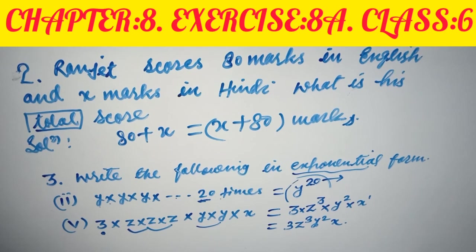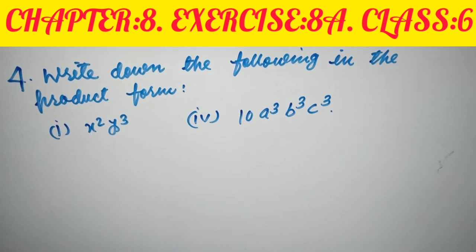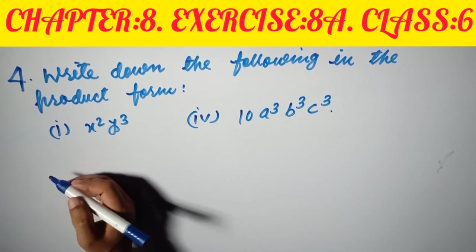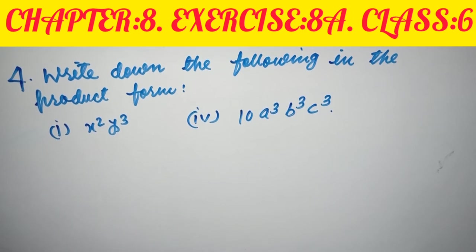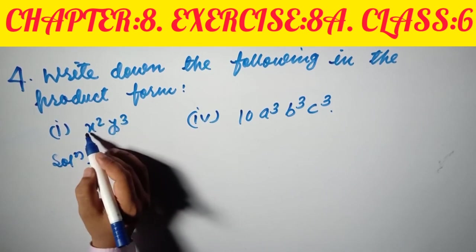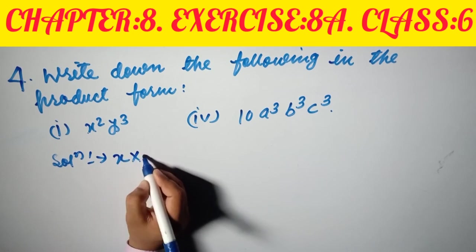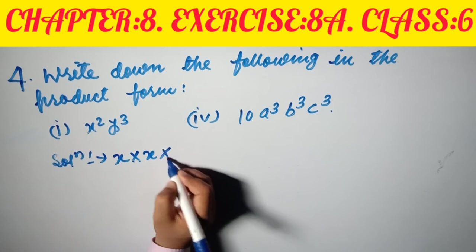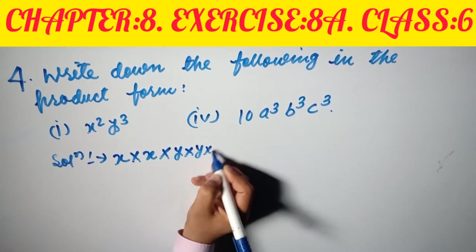Question number four: write the following in product form. This is the reverse of question three. For example, x squared can be written as x multiplied by x — x appears twice. y cubed means y multiplied by y multiplied by y — y appears three times. So x²y³ in product form is x times x times y times y times y.